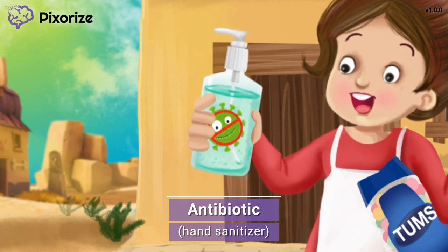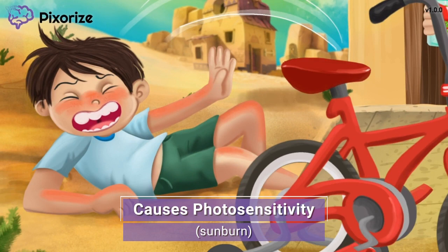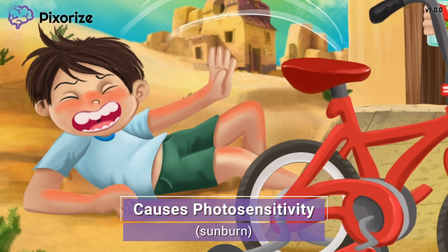This boy has a really bad sunburn from being outside riding his bicycle all day, especially in a hot, sunny desert. You can use this boy's sunburn to help you remember that tetracyclines cause photosensitivity — in other words, it makes the skin more sensitive to the sun, so people taking tetracyclines are more likely to get sunburns. Educate your patients to wear sunblock and protective clothing when outdoors, and if possible, to avoid direct sunlight.